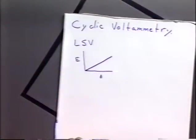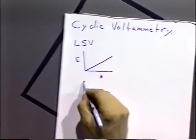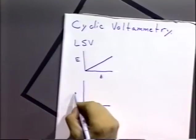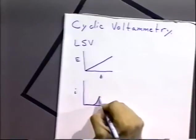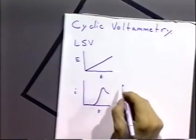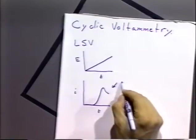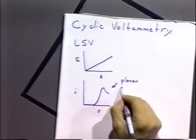Before we left, we talked about linear sweep voltammetry, where we used a linearly varying potential versus time and applied that to our working electrode, then measured the current that flowed. For LSV, we apply a potential versus time as a linear function, and if we look at the current versus time, we see a current wave for planar diffusion.